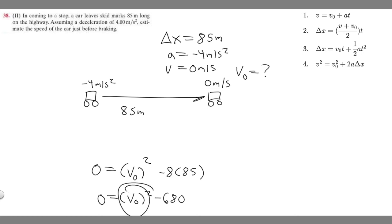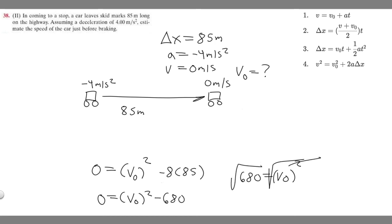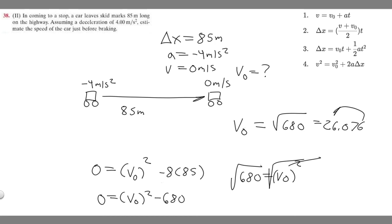Moving the 680 to the other side: 680 equals v-sub-zero squared. Taking the square root of both sides, v-sub-zero equals the square root of 680, which is approximately 26.076. Rounding to the whole number, the initial speed of the car just before braking was 26 meters per second.